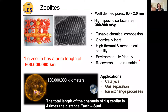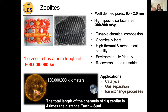Zeolites are widely used in classical applications such as catalysis, gas separation, and ion exchange processes. They are considered environmentally friendly materials because they consist of silicon and aluminum only. Just for curiosity: one gram of zeolite has a pore length of 600 million kilometers, while the distance between the sun and the earth is 150 billion kilometers. This means the total channel length of one gram of ZSM-5 with MFI type structure is about four times bigger than the distance between the earth and the sun.